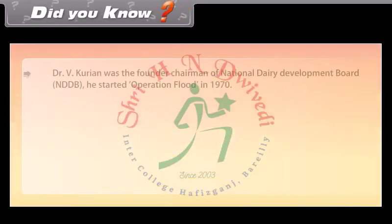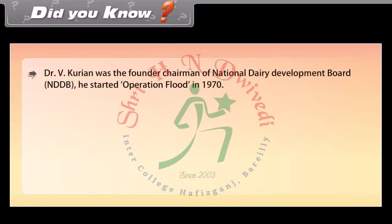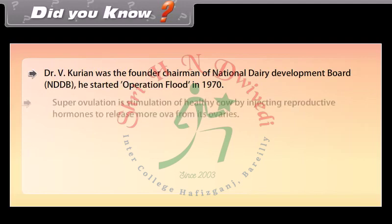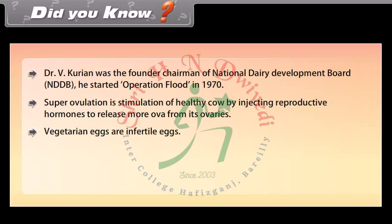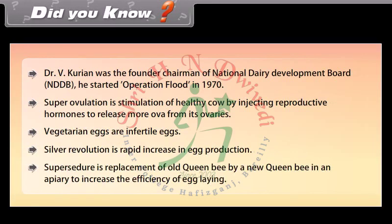Dr. V. Kurian was the founder chairman of the National Dairy Development Board (NDDB) and started Operation Flood in 1970. Superovulation is the stimulation of a healthy cow by injecting reproductive hormones to release more ova from its ovaries. Vegetarian eggs are infertile eggs. Silver revolution refers to the rapid increase in egg production. Super seizure is the replacement of an old queen bee by a new queen bee in an apiary to increase the efficiency of egg laying.